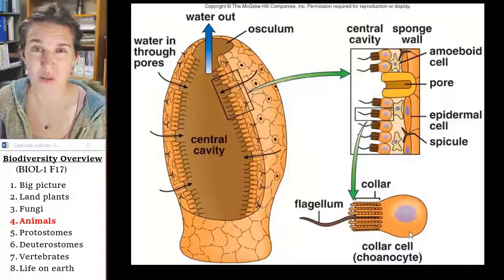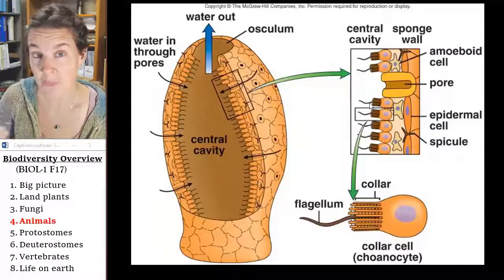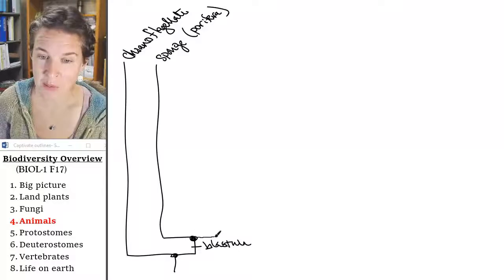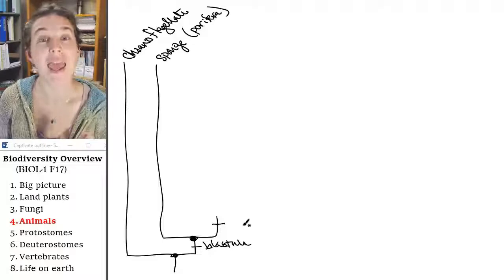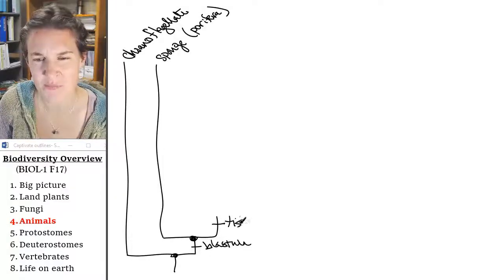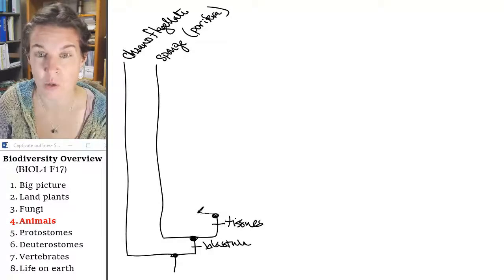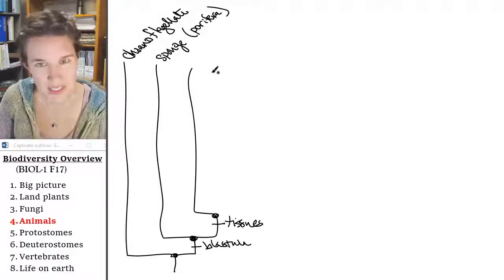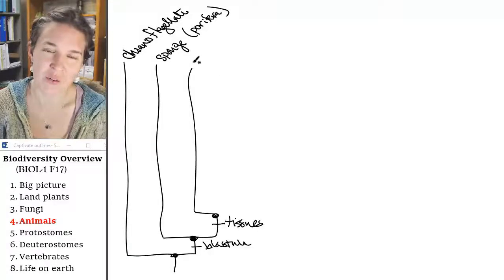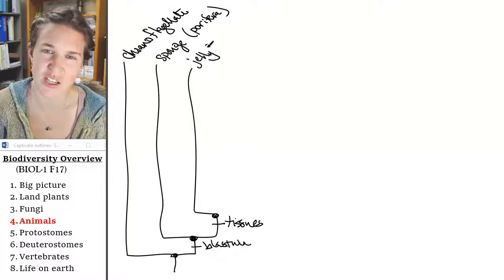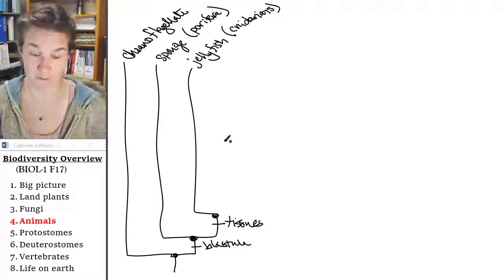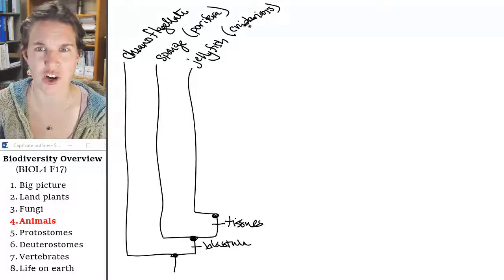Sponges are pretty primitive. The next level up is a group of organisms where everybody beyond this point has tissues — and that is not Kleenex, my friends. The most primitive animal with a blastula that also has tissues is a group you can think of as jellyfish, but it includes other critters, and they're cnidarians. They're cnidarians because they have this phenomenal, amazing structure called a cnidocyte.